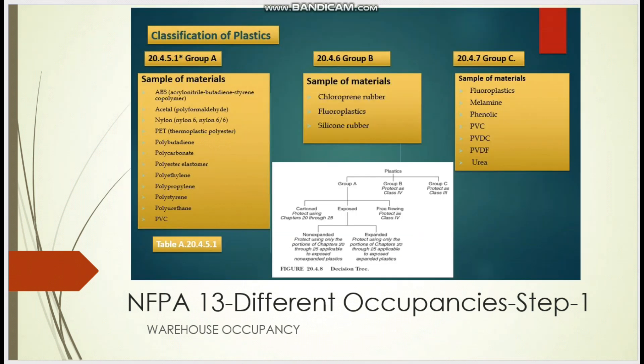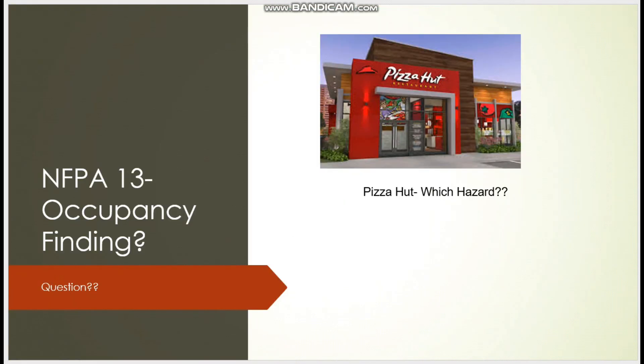For the commodity classification of plastics, we have Groups A, B, and C. For example, Group B includes silicon rubber, and Group C includes materials like fluoroplastic and PVC. I will explain the design of storage occupancies in detail later.